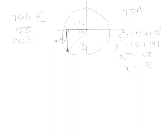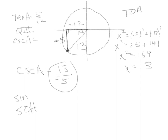Now find cosecant A. Cosecant is the reciprocal of sine. Sine from SOHCAHTOA is opposite over hypotenuse. The opposite of A is negative 5 and the hypotenuse is 13. Taking the reciprocal gives us 13 over negative 5. This can't be simplified, so that is our answer.